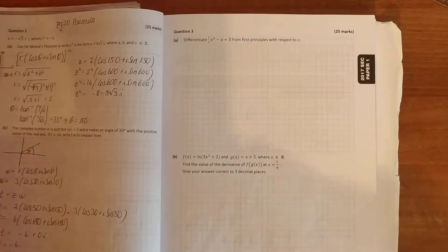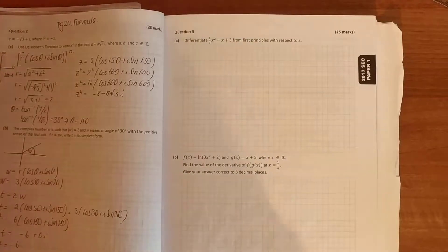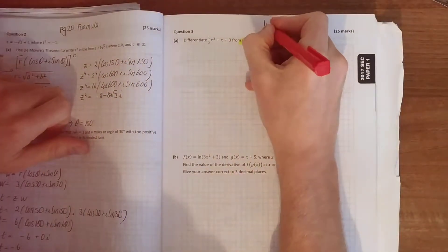In 2017, paper 1, we were asked to carry out a differentiation question. The first one is differentiation from first principles. So once we see first principles, we know we're going to be using this formula here.